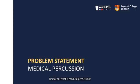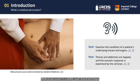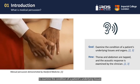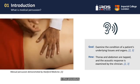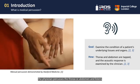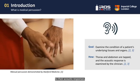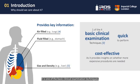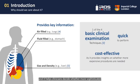First of all, what is medical percussion? Medical percussion is a widely used clinical technique to examine the condition of a patient's underlying tissues and organs. In this procedure, the physician percusses the thorax or abdomen and listens to their acoustic responses. This technique provides information on the presence of air or fluids in organs, and even their size or consistency. It is one of the basic clinical examination techniques — quick to perform — and it helps clinicians decide whether more sophisticated or costly examinations are required.